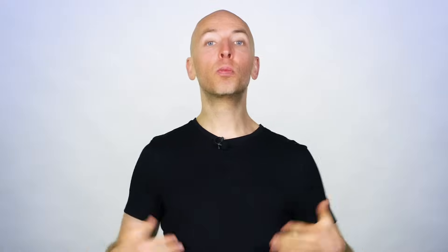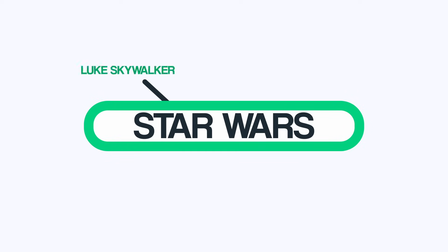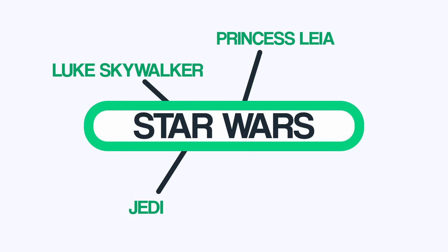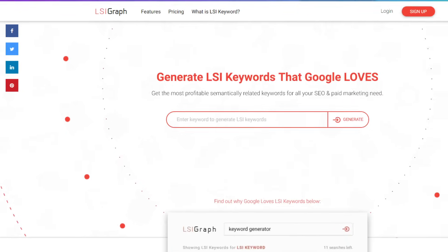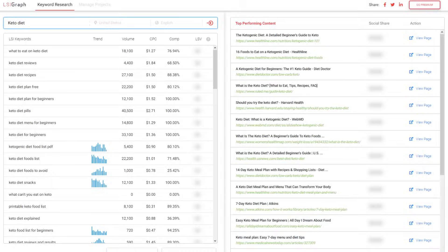Our next free SEO tool is called LSI Graph. You've probably heard of LSI keywords before — they're basically words and phrases that are closely related to your main keyword. When you include these terms in your content, Google sees your content as comprehensive, which can give you a nice little rankings boost. For example, if your target keyword is 'Star Wars,' LSI keywords would be things like Luke Skywalker, Jedi, Princess Leia, and the Millennium Falcon. Just enter your target keyword into LSI Graph and you'll get a list of LSI keywords that you can sprinkle into your content.